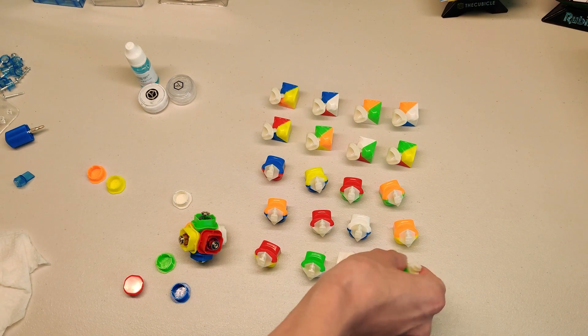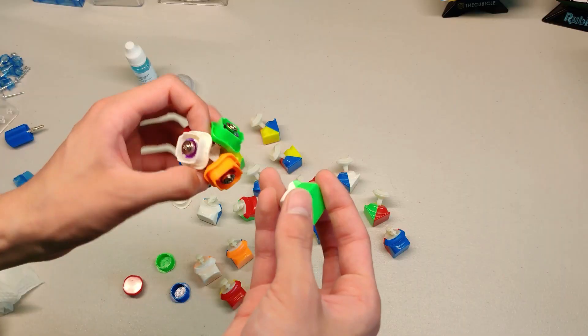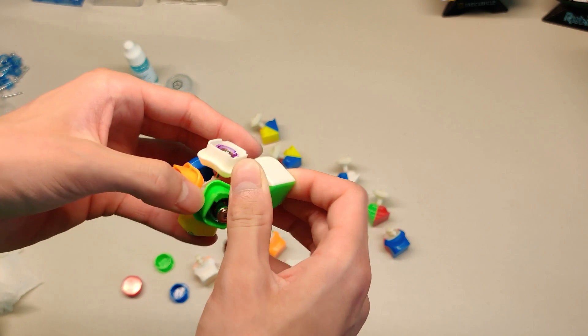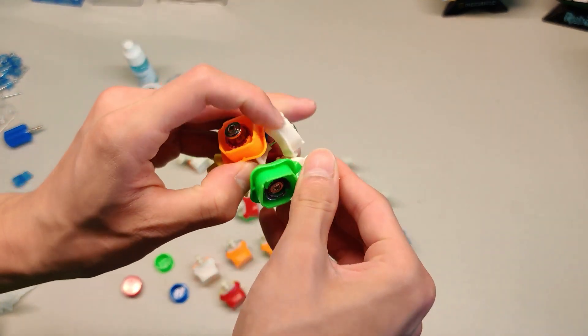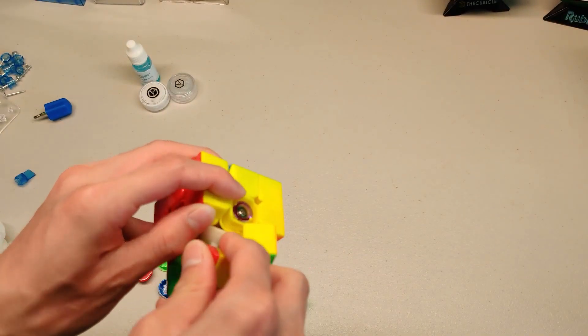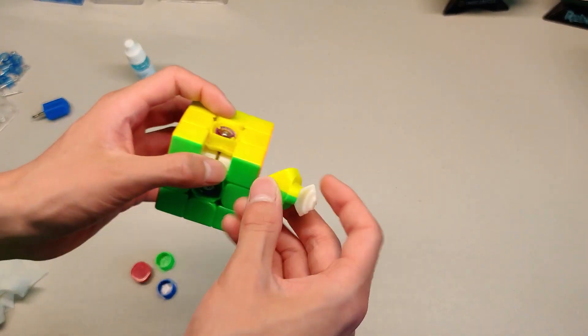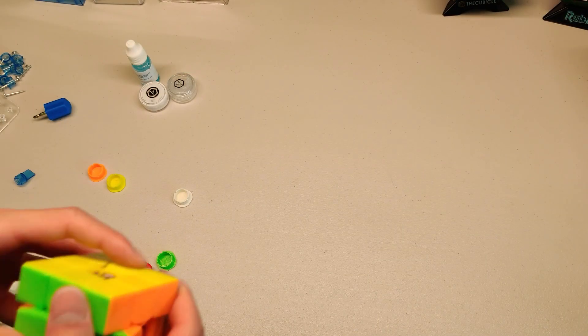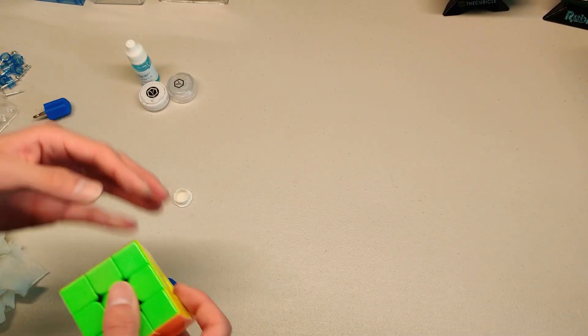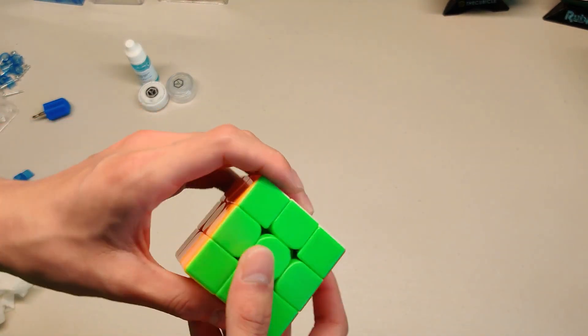And there we go. That's all the edges. All these should have stronger magnets now. All there is to do is assemble the cube. So we'll take an edge and just put it in its place like this, take the last corner, just like that, and last edge. Alright, so I'm going to put the center caps back on just so that I can see how the cube will feel.